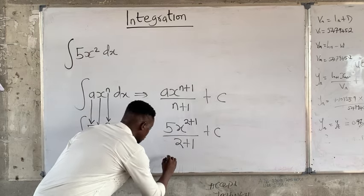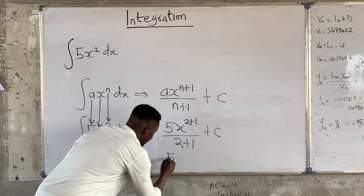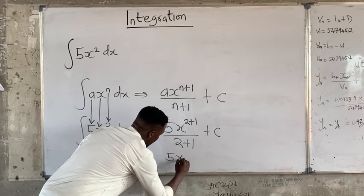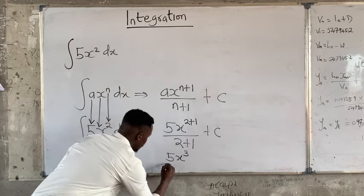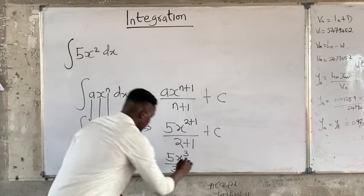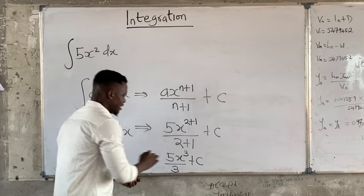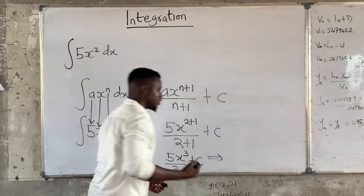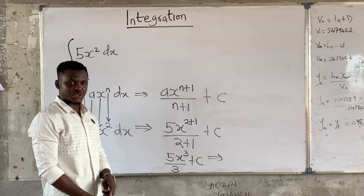So this will give rise to 5x cubed over 3 plus c. So the answer to this question becomes, you press your calculator, whatever 5 over 3 gives you, you put it down and you have your x cubed.